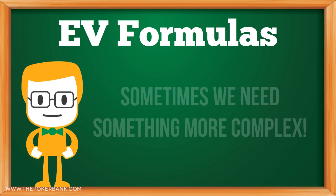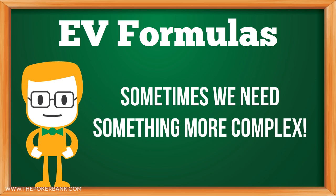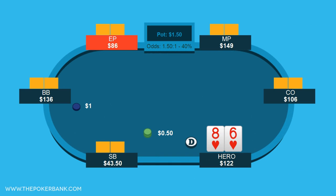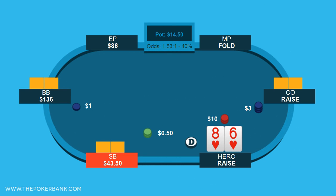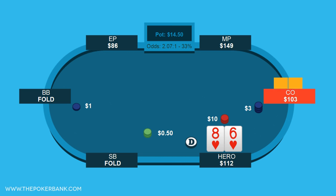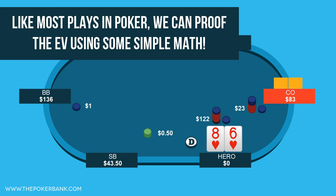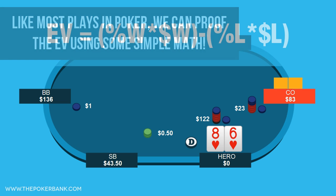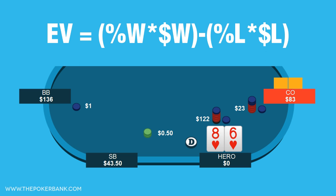There are times when we need a more complex version of this formula, so let's look at an example to get us started. In this hand it folds to the cutoff who opens, we semi-bluff 3-bet with 8-6 suited, the cutoff 4-bets to 23, and we 5-bet shove. Like most plays in poker we can proof this using some simple math, so let's pull out our EV equation. You may notice that this basic formula doesn't account for all possible outcomes.